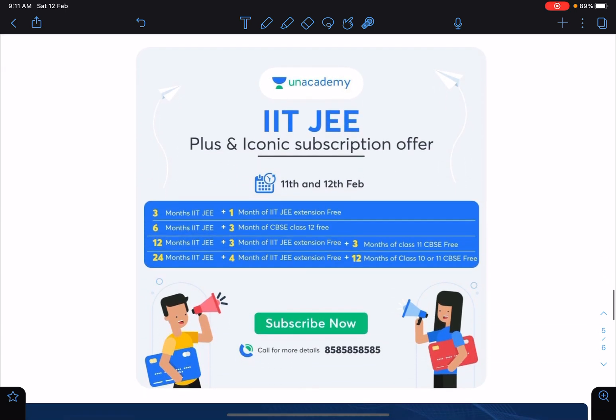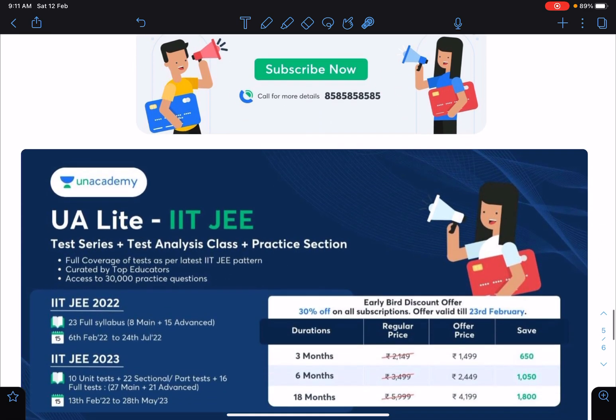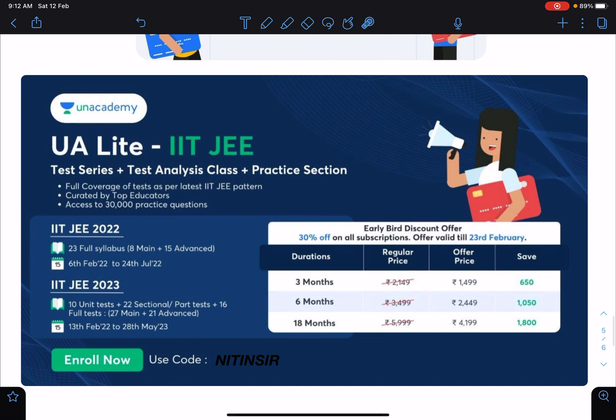So guys there is an offer from Unacademy side, and earlier also I have told and this is valid up to 11th and 12th February. So it is the last day with three months, one month extension you are getting with six month, three months, 12 months - 3, 3, 3, like this you can check. It is the same as earlier. To know more about these subscriptions you can call this given number. Also about the Unacademy test series - it is coming and it will be test analysis class and practice sessions. These are the prices, very affordable I feel, and you can use my code NITINSIR for any of these plans.